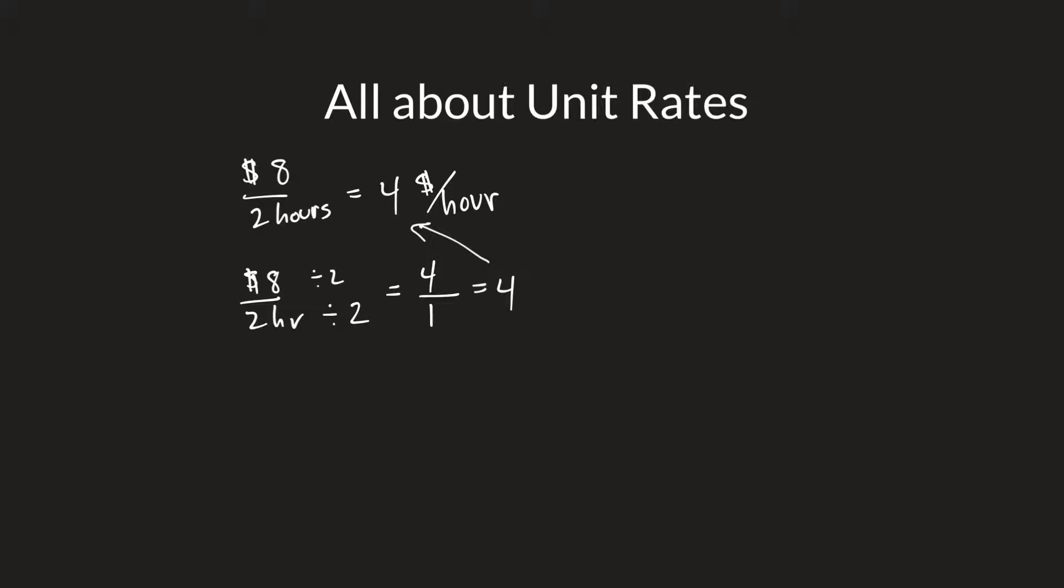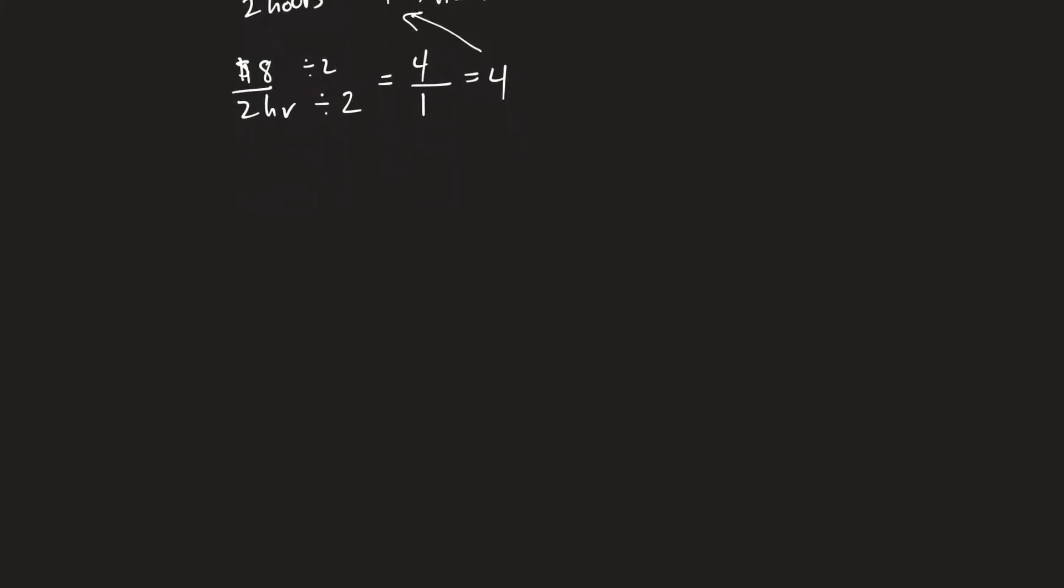Now you might come across something like this. Write the unit rate for something like two-thirds to one-third. All right, so this is the same thing as two-thirds divided by one-third. Okay, it's the same thing, and this is called a complex fraction.